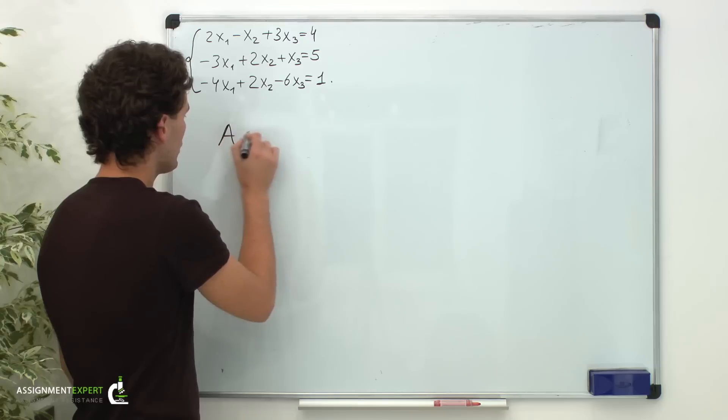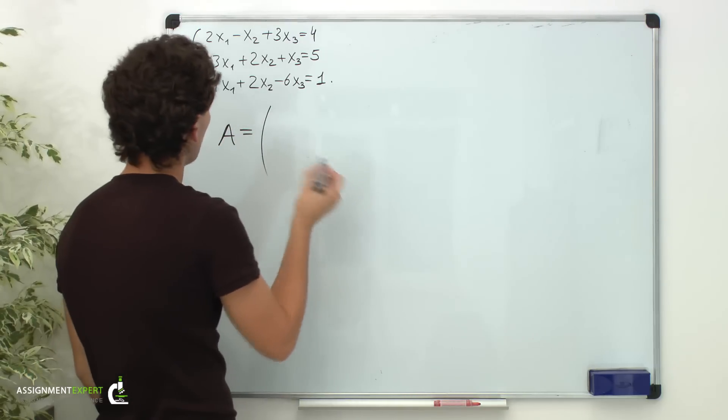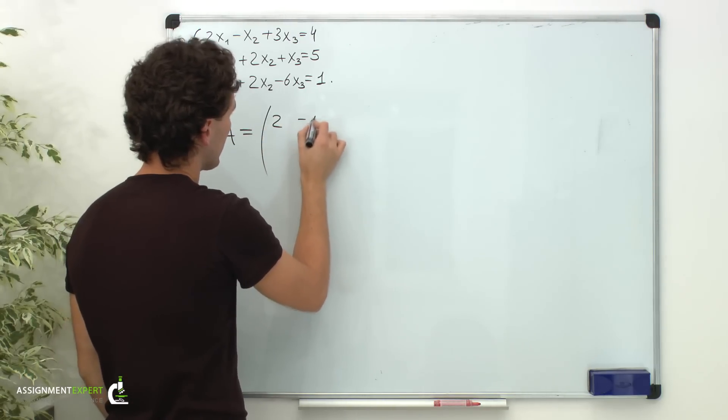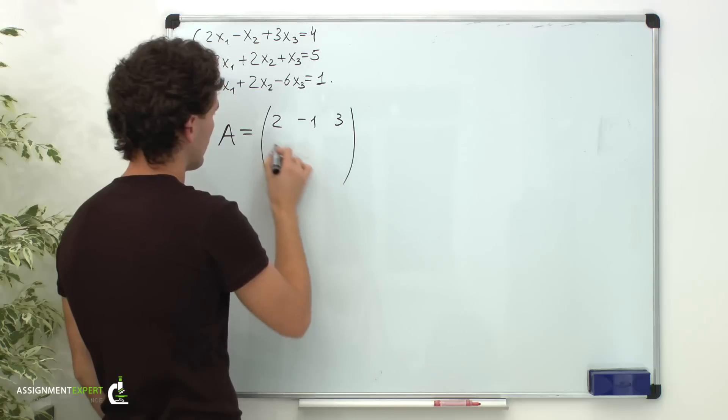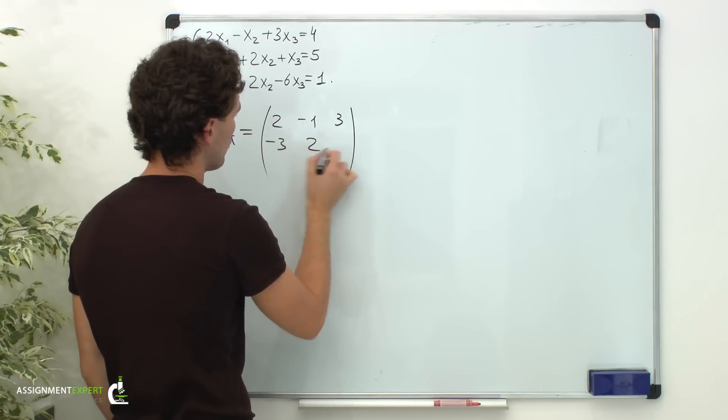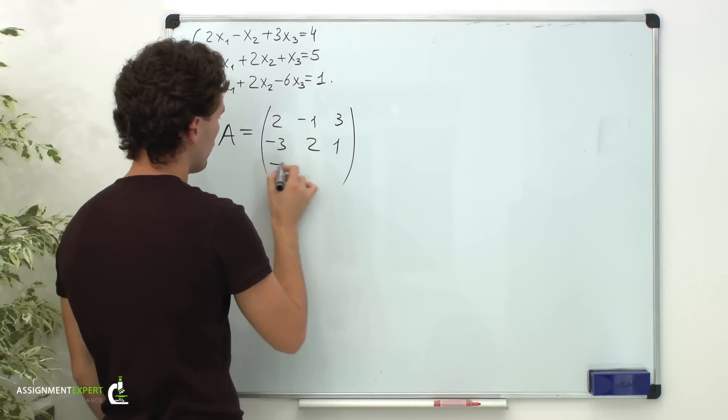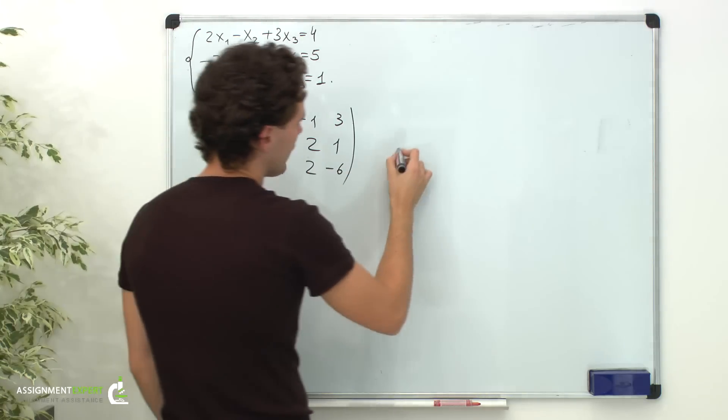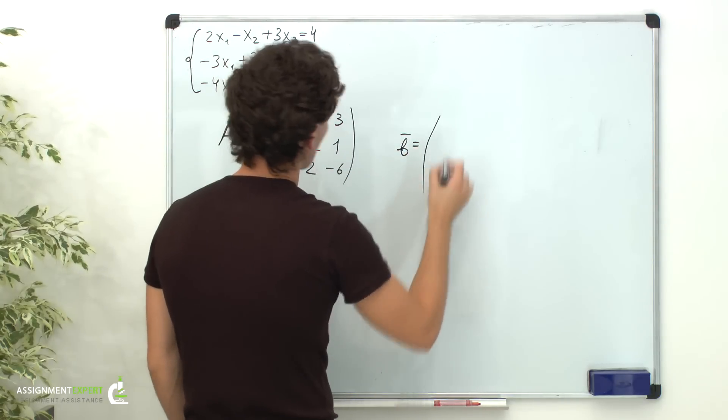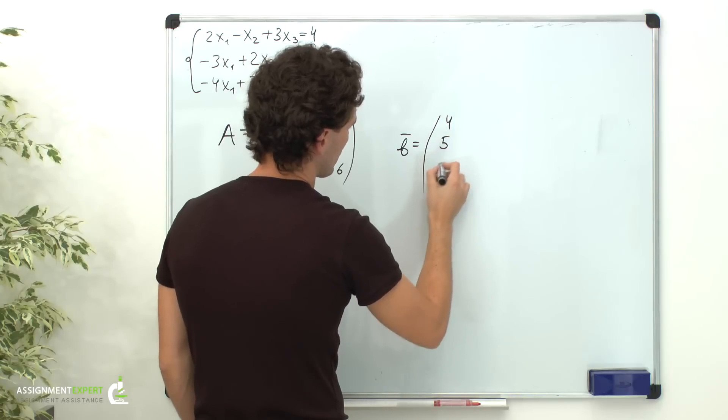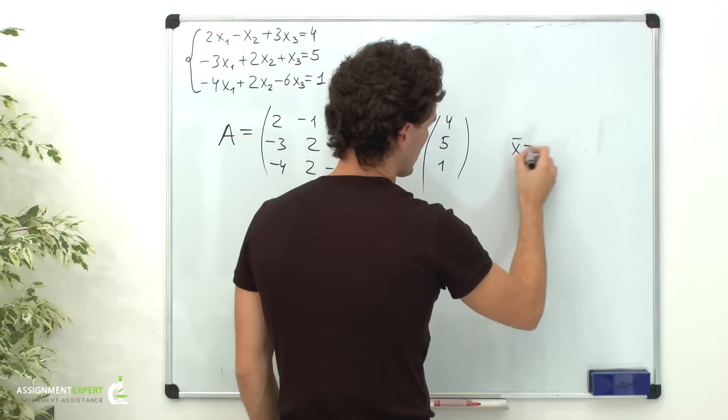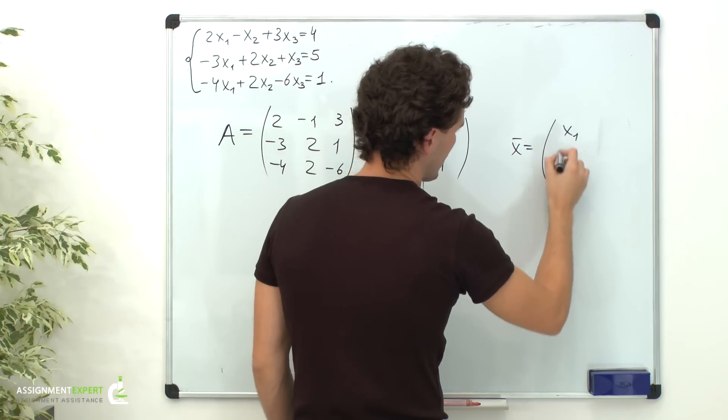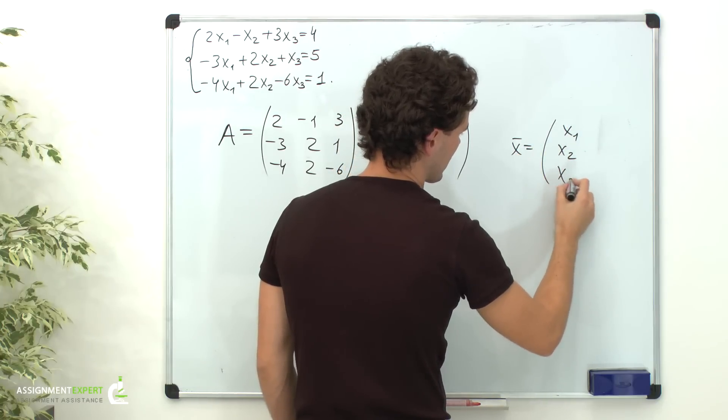The matrix of coefficients looks like this. In the first row we have 2, negative 1 and 3. In the second row, negative 3, 2 and 1. In the third row, negative 4, 2 and negative 6. The vector of free terms is 4, 5 and 1. And the vector of unknowns is x1, x2 and x3.